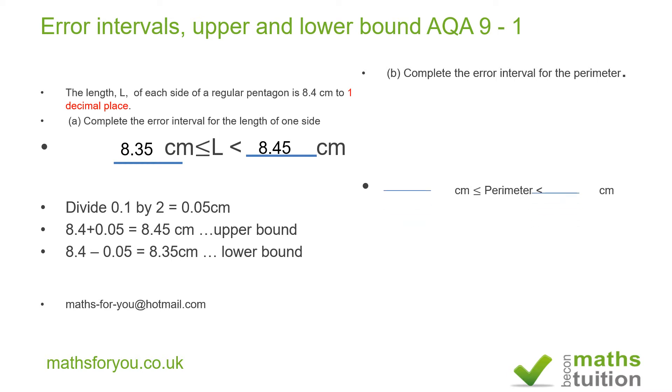Now, because this is a regular pentagon, all the sides have to be 8.4, all the same. So, what I then do for my upper bound is to multiply 8.45 from here by 5. Okay, hope that makes sense.